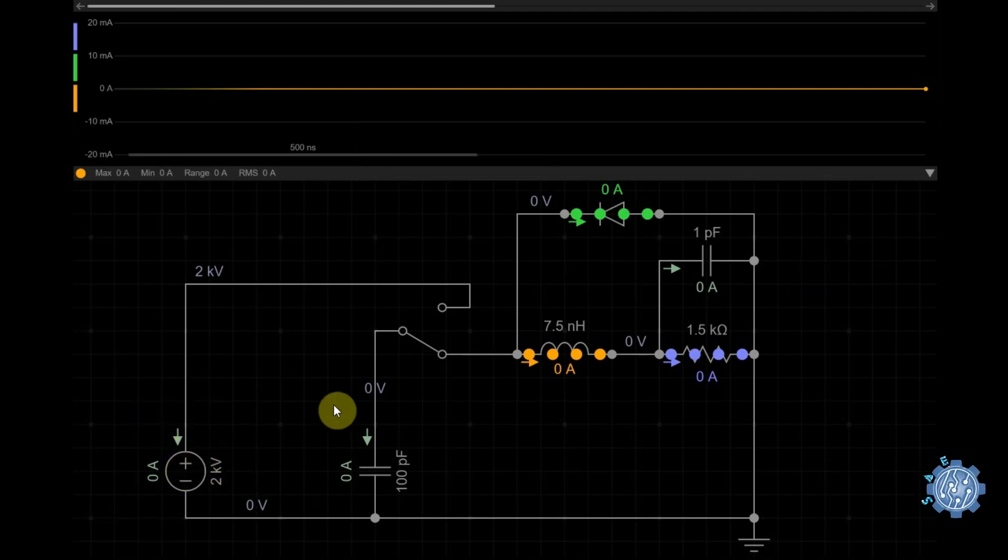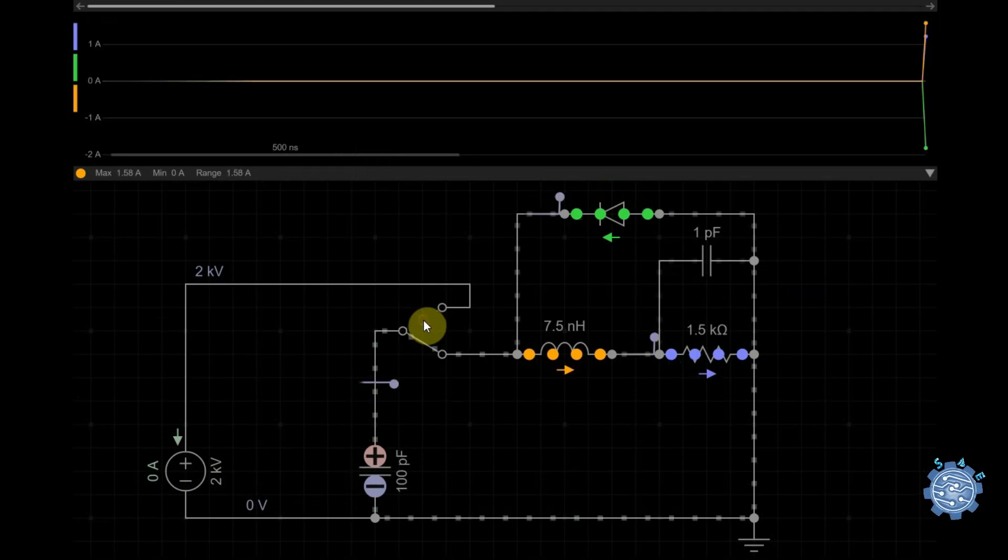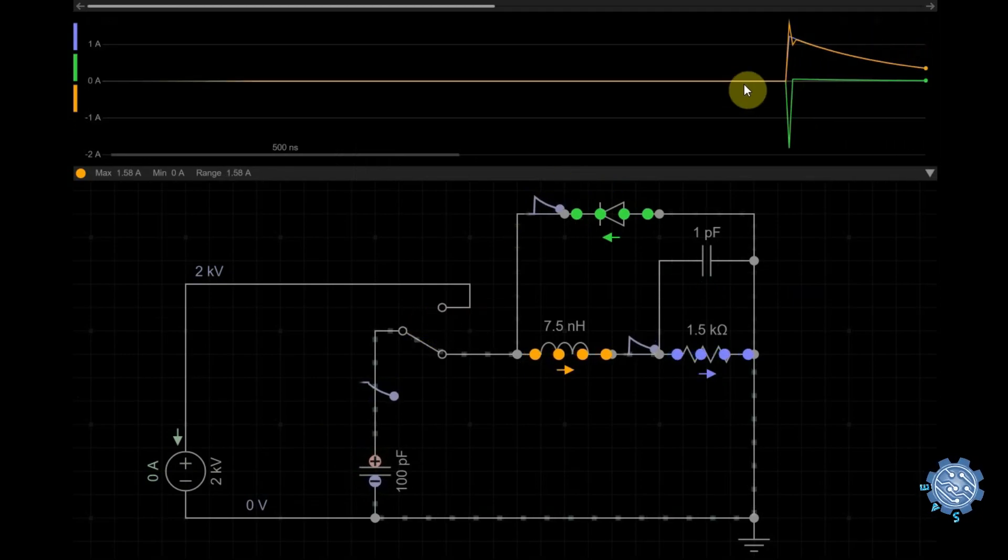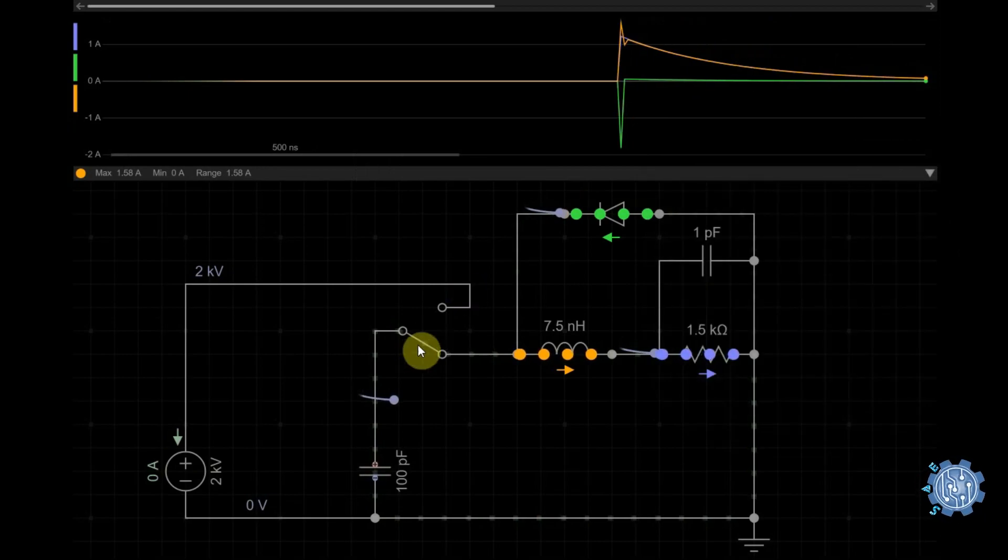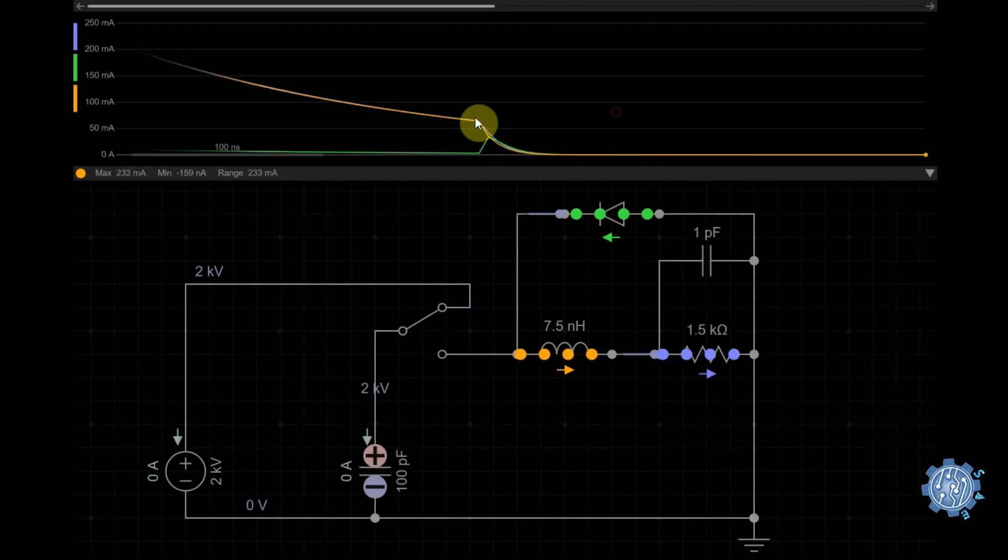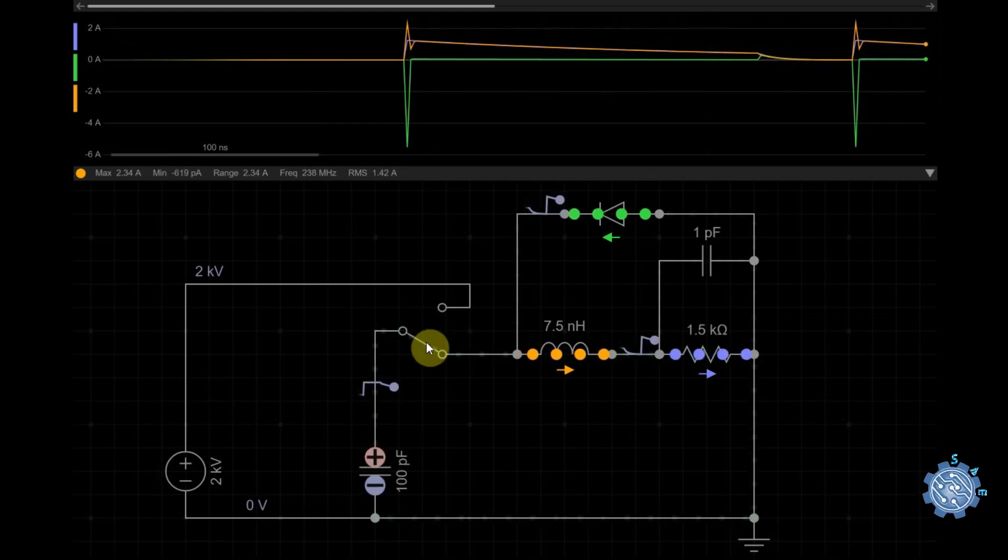First we have to charge the capacitor at the high voltage we want. Then we release the energy from the capacitor in a pulse similar to the one from ESD. We can see that the diode absorbs the pulse and drains its energy in order to protect the load.